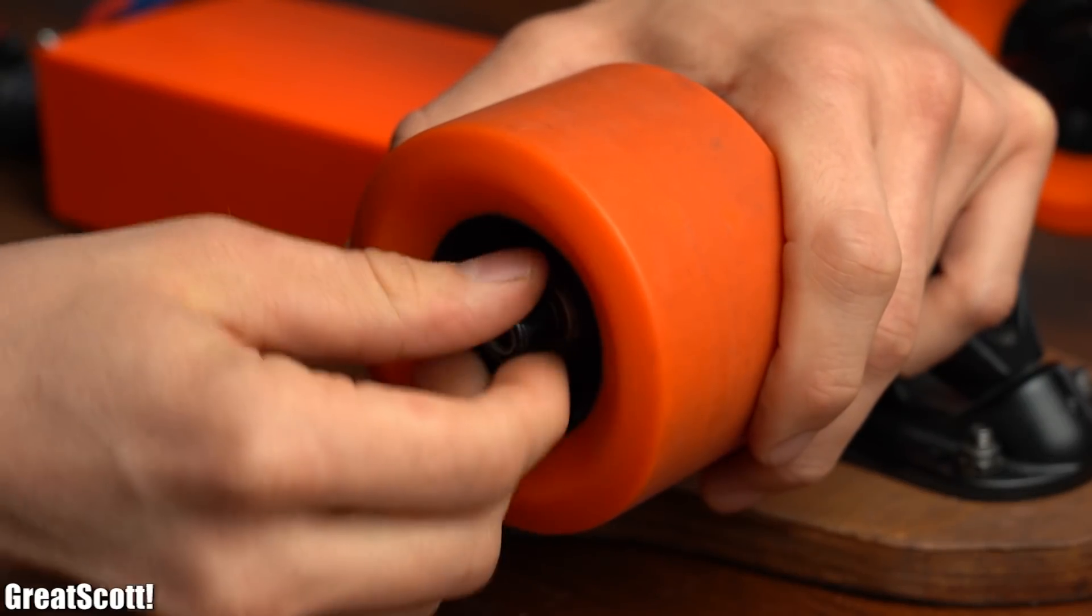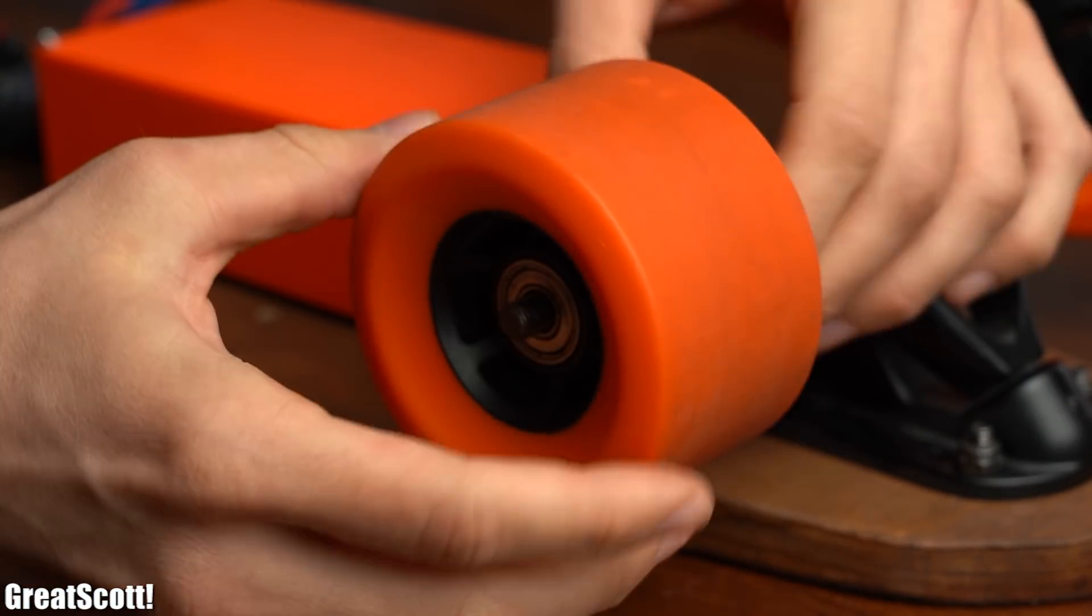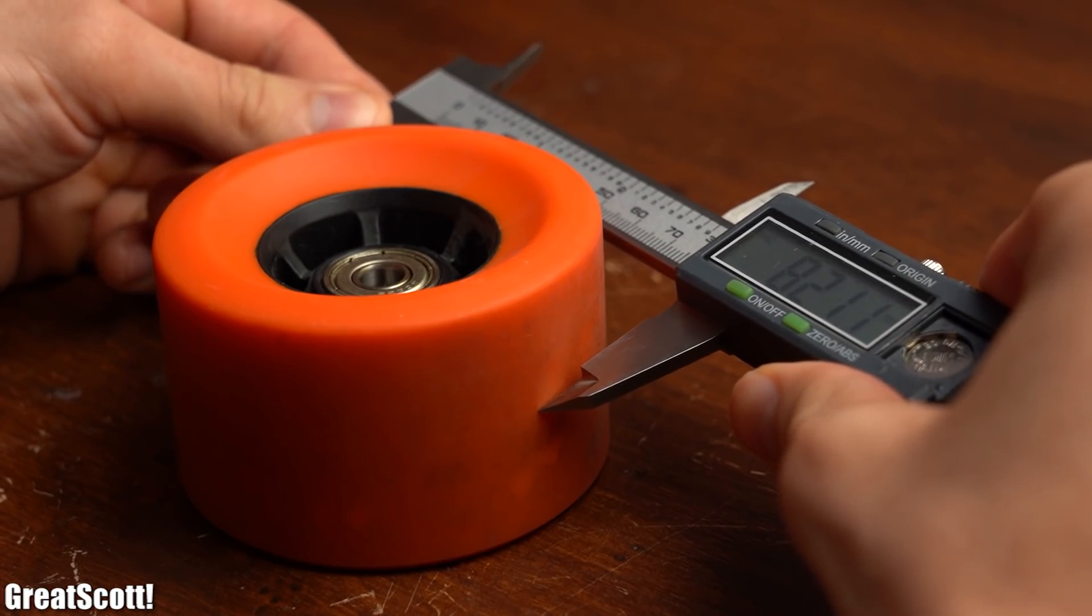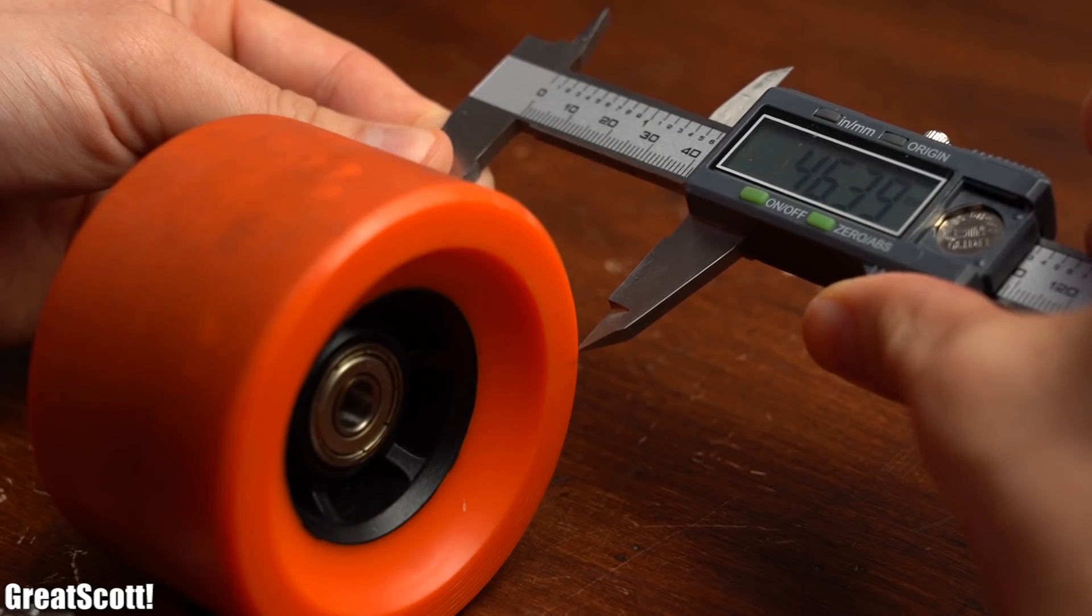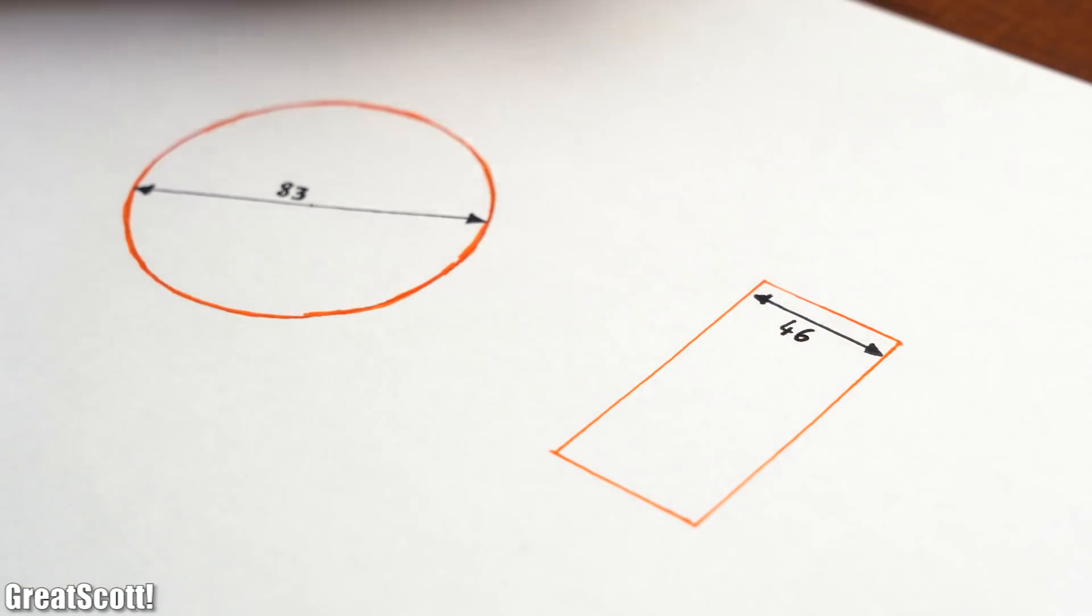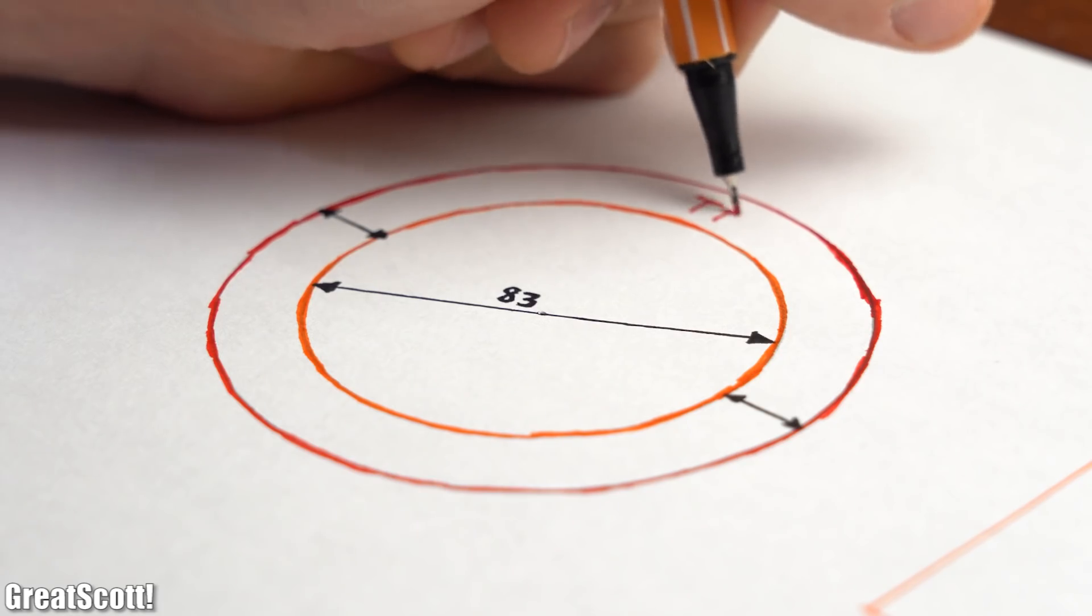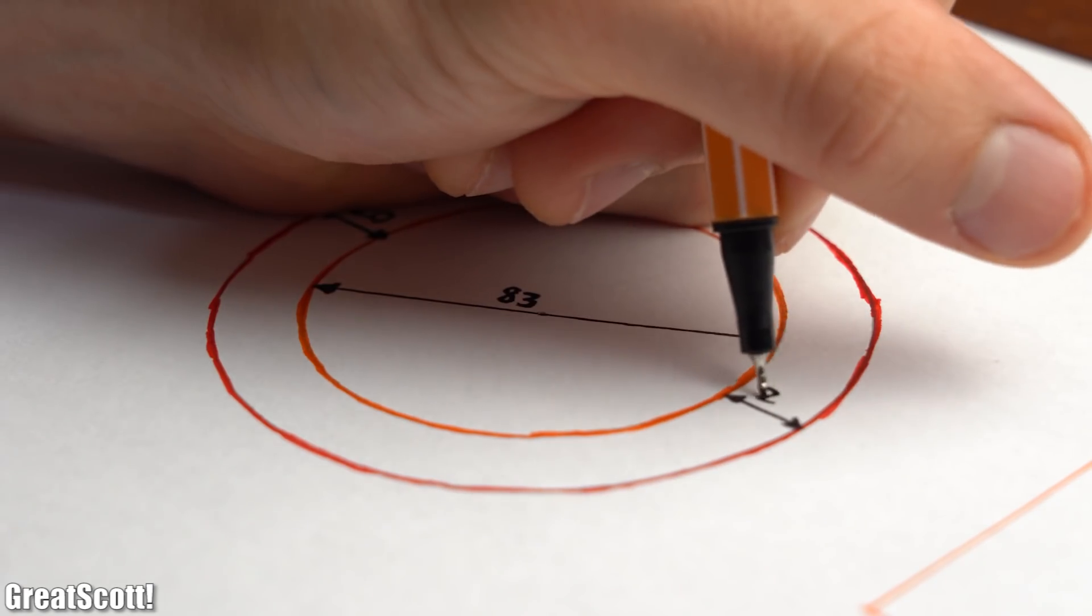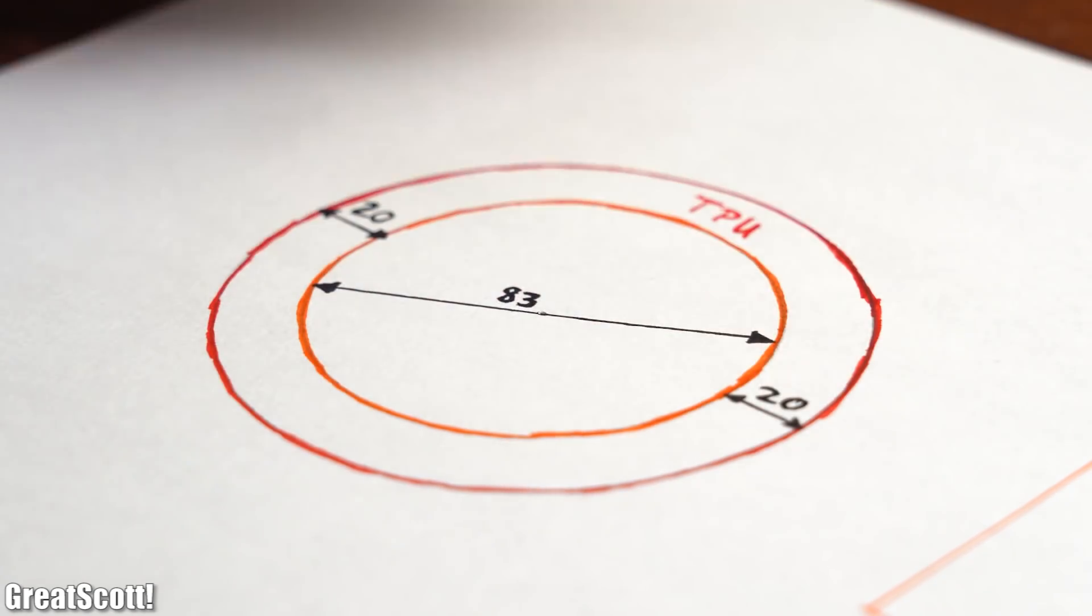Let's start off with the simpler task by creating off-road tires. For that I simply measured the diameter and width of one wheel which was around 83mm and 46mm. My idea was to basically create a sleeve for the four wheels from the TPU filament which will add an additional 4cm of diameter to the wheels.